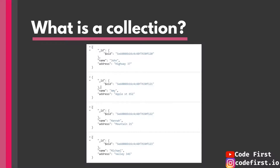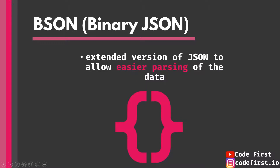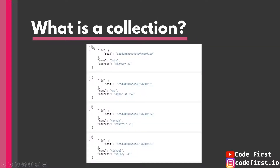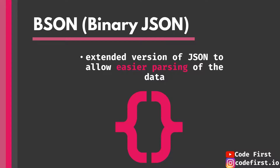Here is a sample collection of a bunch of users and their addresses — all JSON documents, or more precisely BSON documents, but displayed in JSON format. BSON stands for binary JSON. It is an extended version of JSON to allow easier parsing of the data. BSON was made by MongoDB itself for their own database to enable faster and easier parsing. You don't have to stress about the differences between BSON and JSON because it essentially looks the same — it is just different internally.